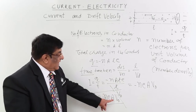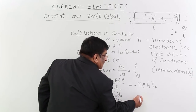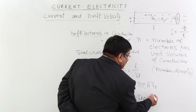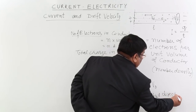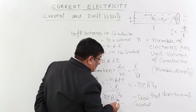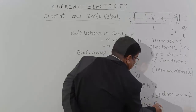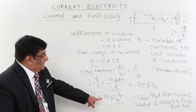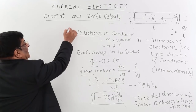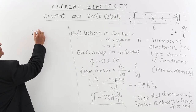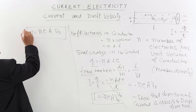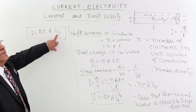So I = −n·e·A·V_D. The negative sign shows that the direction of current is taken as opposite to the direction of drift velocity. That is the significance of this minus. Otherwise, magnitude-wise, I = n·e·A·V_D. This is our famous formula for electric current related to drift velocity. Please remember — this is an important one.